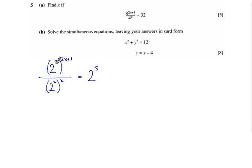Now rules of indices say that when you have a power raised to a power, we multiply those values. So it's 2 to the power of 6x plus 3. On the bottom we have the same sort of thing. We have 2 to the power of 2 all raised to the power of x, so that's 2 to the power of 2x. On this left-hand side we have 2 to the power of something divided by 2 to the power of something, and rules of indices say that we subtract the powers.